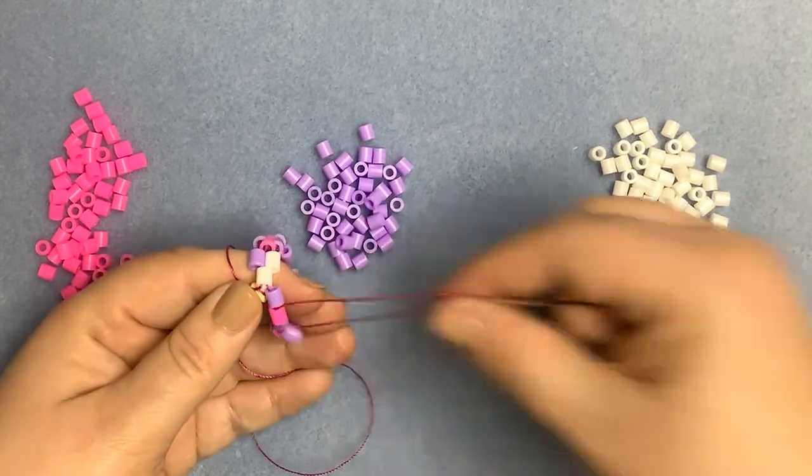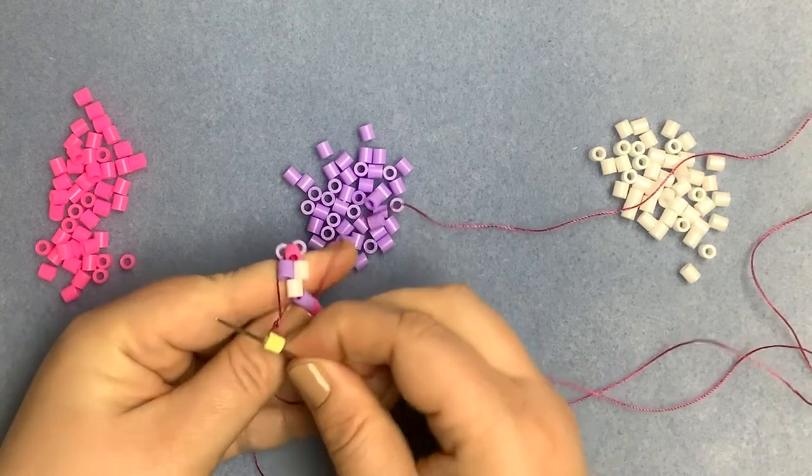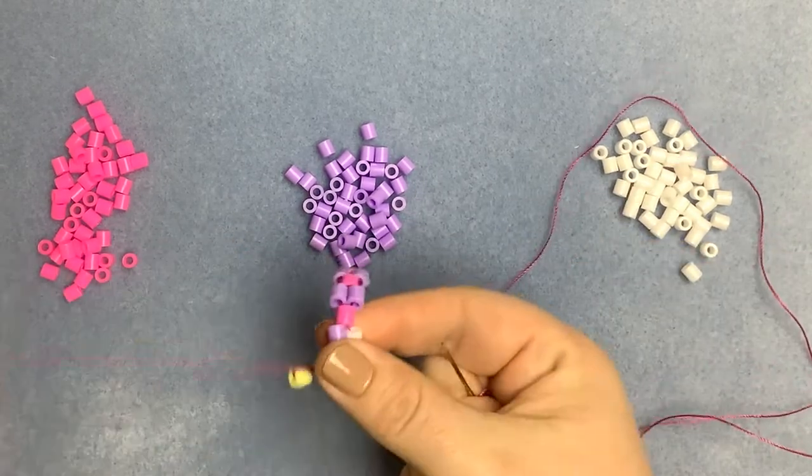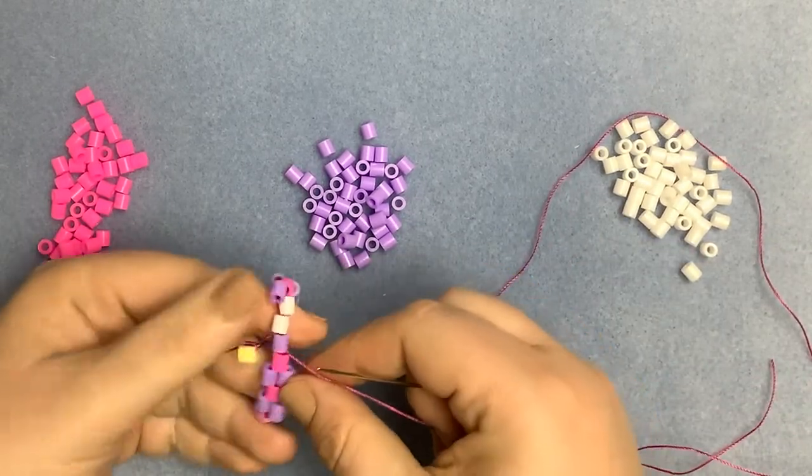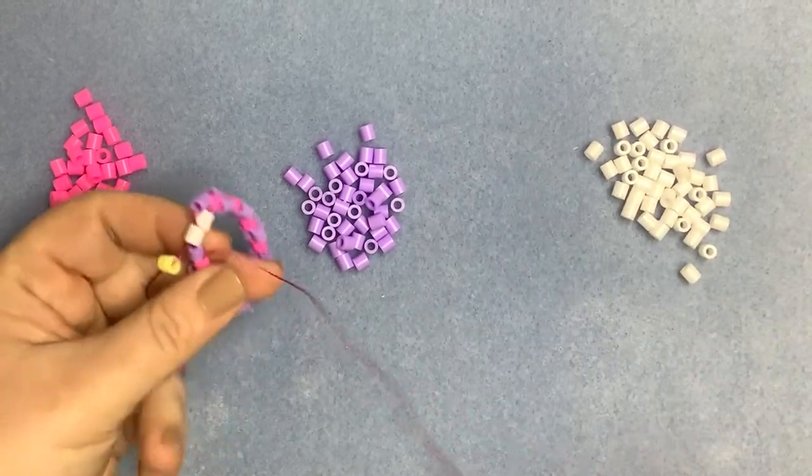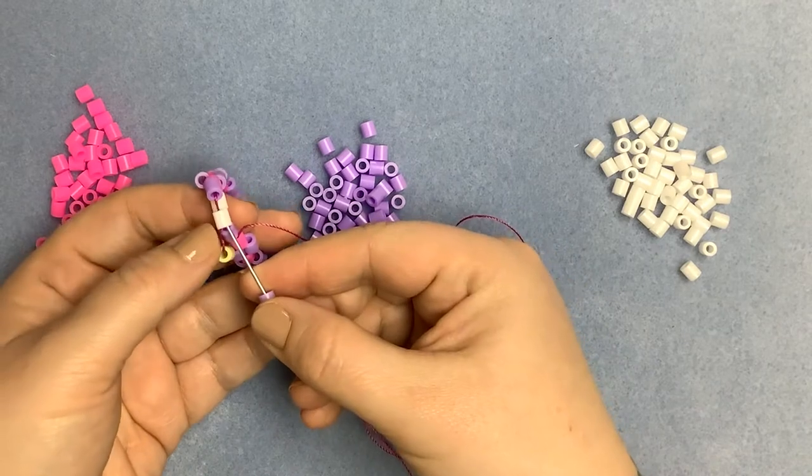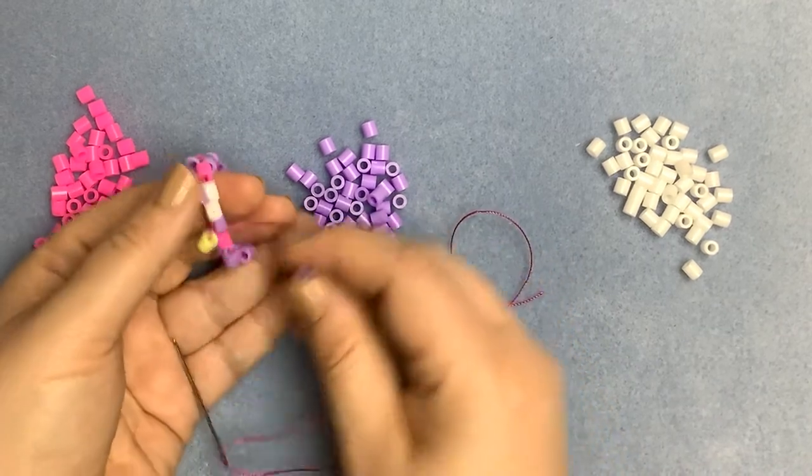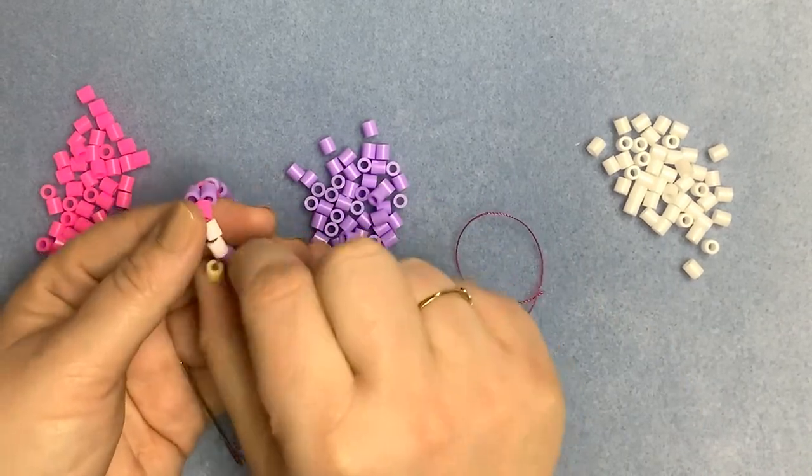So here we go. Before I put the last bead of the row on, I'm just going to move this keeper bead back a little bit so it's out of the way and we can see what we're doing. I'm going to pick up the bead, the final bead for the row.